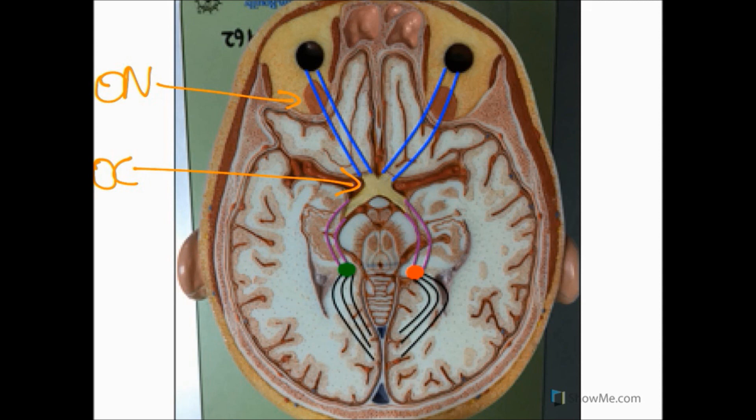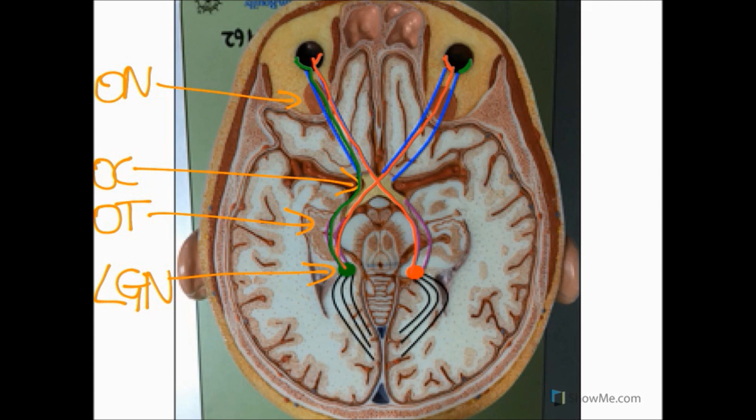From the optic chiasm, fibers travel via the optic tracts towards the lateral geniculate nuclei. An important thing to note is that neurons originating from the nasal retinal fields of both eyes decussate at the optic chiasm to the contralateral side before synapsing at the lateral geniculate nucleus, whereas neurons from the temporal retinal fields remain on the ipsilateral side and do not cross at the optic chiasm.